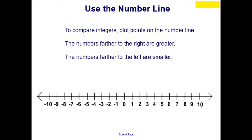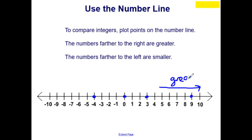To compare integers, we're going to plot points on the number line. The numbers farther to the right are greater, and the numbers farther to the left are smaller. For example, I can plot and compare 9 to 3. I can compare 3 to 0, or negative 4 — I can use any point on the number line. And I can plot it and see that to the right would be greater, and numbers farther to the left are going to be smaller.